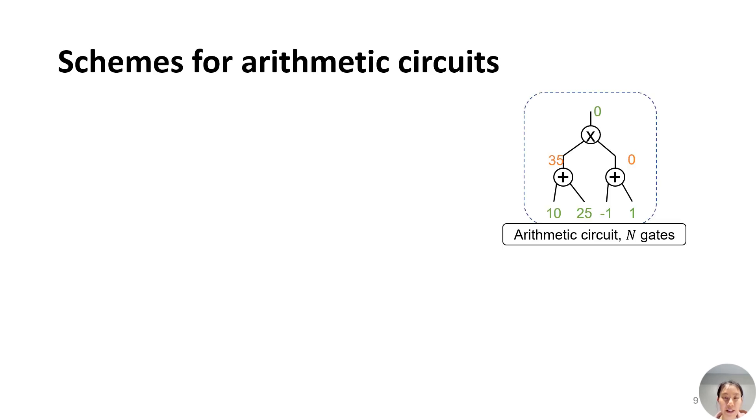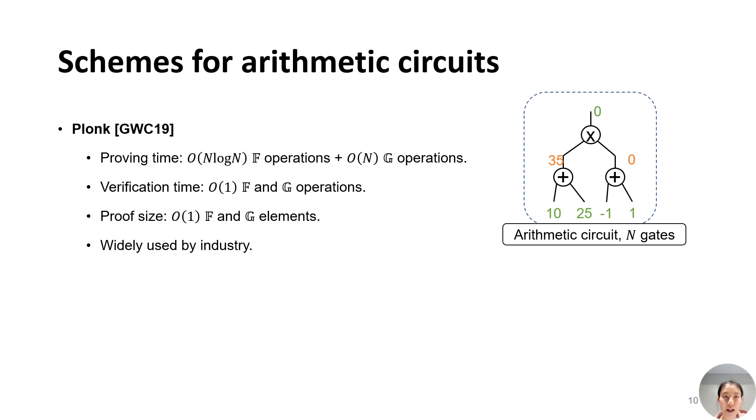We target a specific model called arithmetic circuits, which are constructed by addition and multiplication gates of numbers. Currently, there are general-purpose ZKP schemes designed for generating proofs for any arithmetic circuits. For example, Plonk can generate a proof with only quasi-linear time to the size of the circuit, and the proof size and verification time are both constant. This scheme is popularly used in industry.